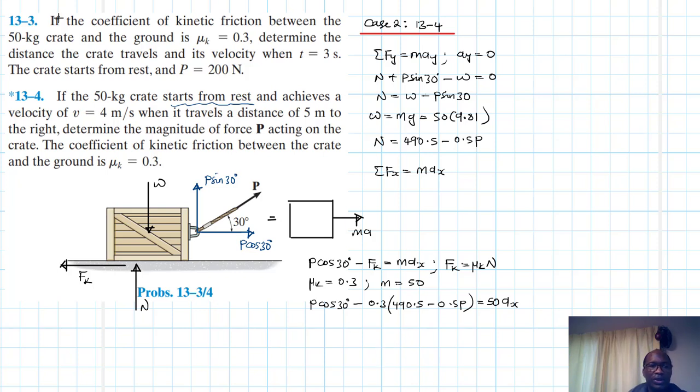And then this is equal to M which is 50 and A_X. We can leave this equation at this stage if we want to so that we find A_X.